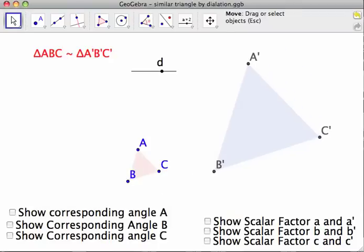So let's take a look at each angle. And also you can move around A, B, and C. No matter how you move this, they're going to be similar triangles. Same shape, but different sizes.